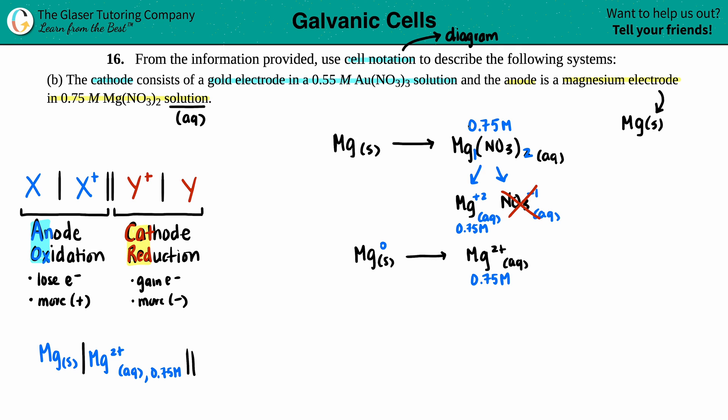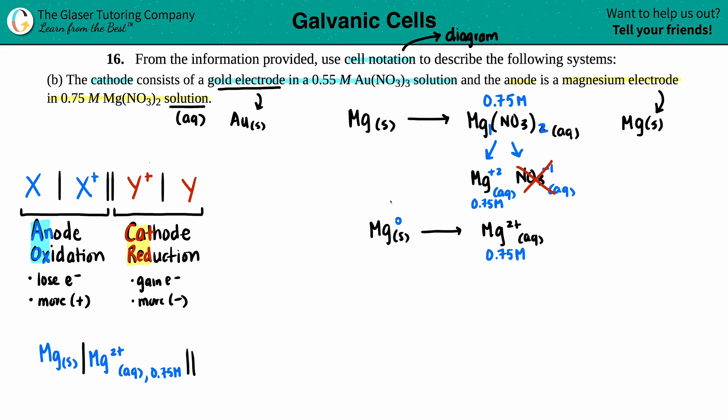When they said that the cathode consists of that gold electrode, gold at standard state is Au on the periodic table, and that's a metal at standard state, so it's going to be solid. Then they told us that the solution is the Au(NO3)3 solution. But remember, reduction is going from a positive to a more negative. You're dropping down in number. So you're going to start off with your solution and go to your electrode. It's the opposite of what oxidation is. We have Au(NO3)3 solution, that's aqueous, and this will go into the electrode, which is just the Au solid.